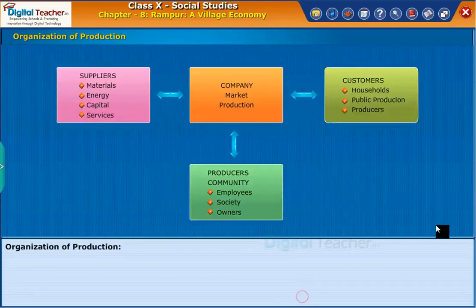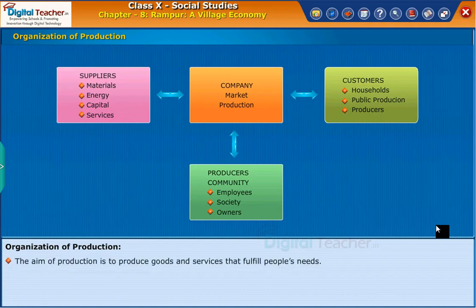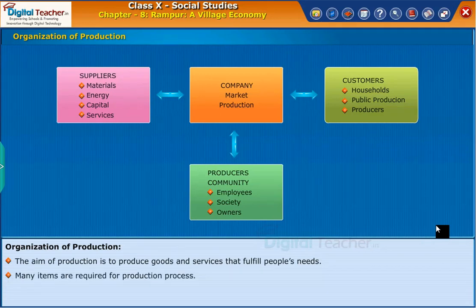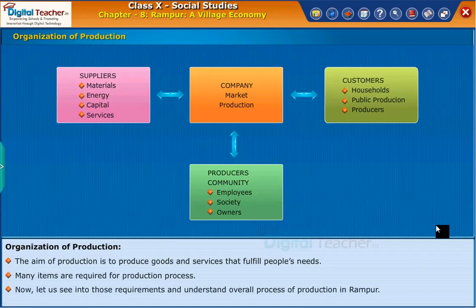Let us now learn how to organize production. The aim of production is to produce goods and services that fulfill people's needs. Many items are required for the production process. Let us see into those requirements and understand the overall process of production in Rampur.